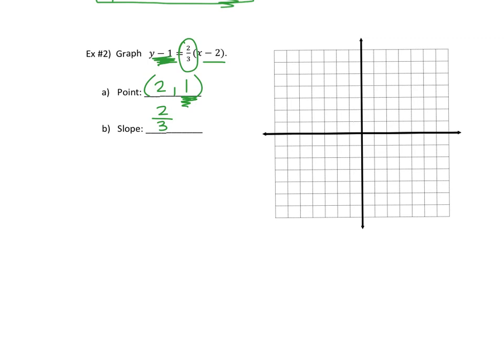The point is (2, 1): two to the right, one up. So here's the point (2, 1). From there, the slope is two-thirds, which means up two, over three to the right. That gives you another point, and that's your line — just draw it in.